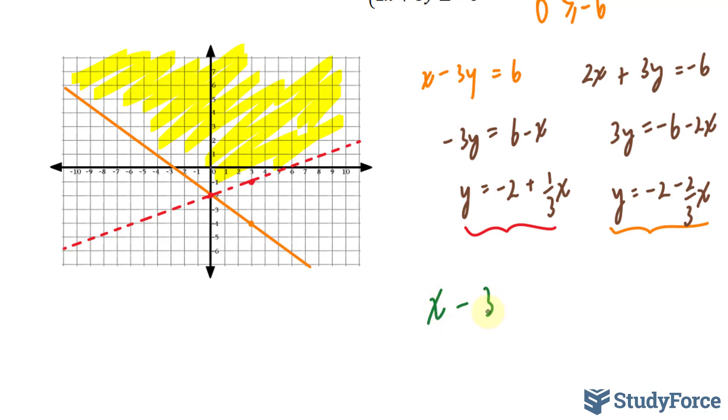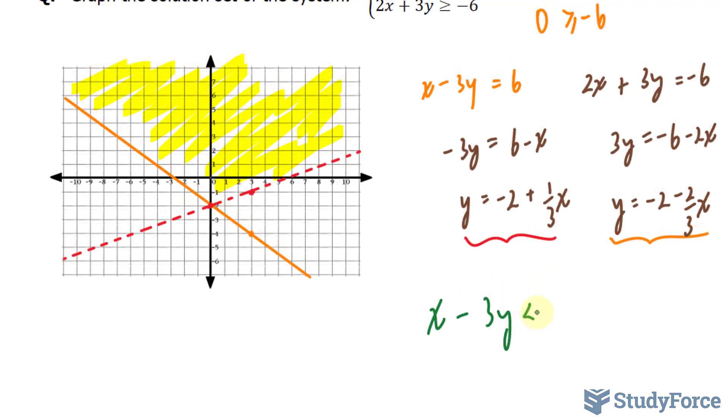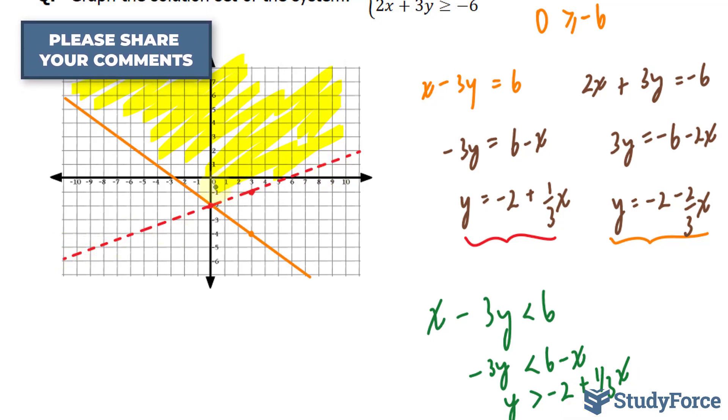Starting off with this one, we have x minus 3y, and the inequality was less than 6. Solving for y, I take this x over, 6 minus x. And at this point, if you divide by a negative number, the inequality flips. So instead of being less than, it becomes greater than. Where we have y is greater than 6 divided by negative 3, which is negative 2, and here we have plus 1 over 3x. Notice that this mathematical statement is telling us that y needs to be greater than the line, negative 2 plus 1 over 3x, the one in red. It has to be greater, anything that's greater. So all of this region.